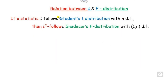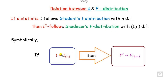Now, once you have the T distribution and the corresponding statistic is called the T-stat, then T-squared will follow the F distribution. If a statistic T follows the T distribution with N degrees of freedom, then T-squared will follow the F distribution with 1 and N degrees of freedom.